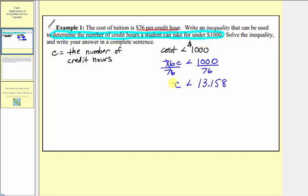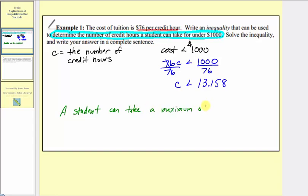The number of credit hours must be a whole number — a student can take ten, eleven, twelve, thirteen, fourteen, and so on credit hours, but they can't take a fraction of a credit hour. So the largest whole number that still satisfies this inequality would be thirteen, which means a student can take a maximum of thirteen credit hours for under one thousand dollars.